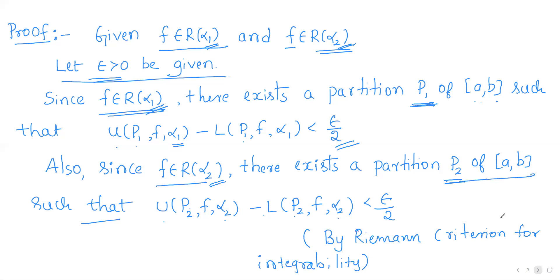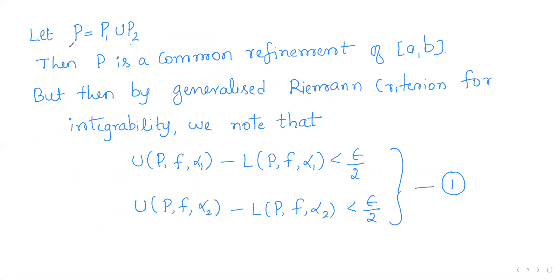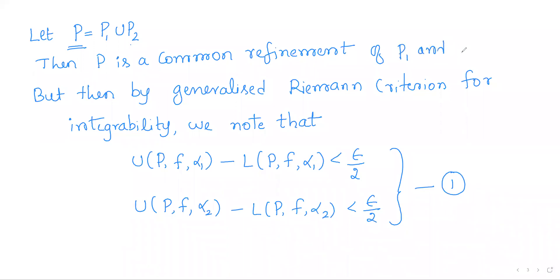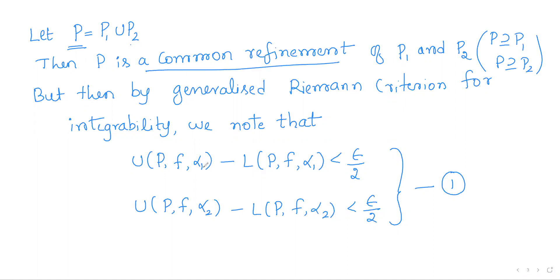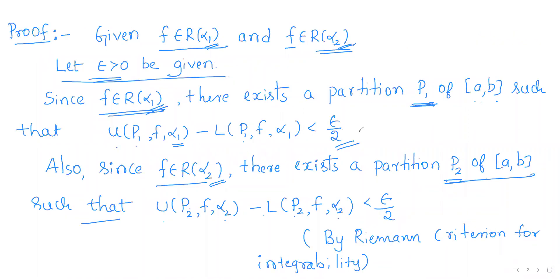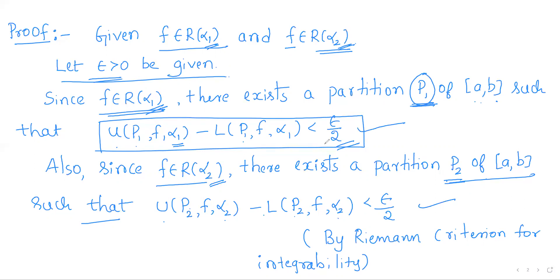Now we have two partitions: P₁ and P₂ are both partitions of [a, b]. Take the union P = P₁ ∪ P₂; then P is called the common refinement of P₁ and P₂, because P contains P₁ and P also contains P₂. Now applying the generalized Riemann criterion, the conditions not only hold for partition P₁ but also for every refinement of P₁.